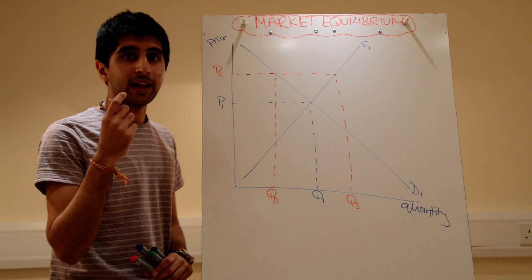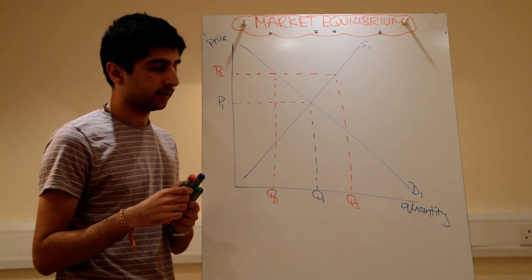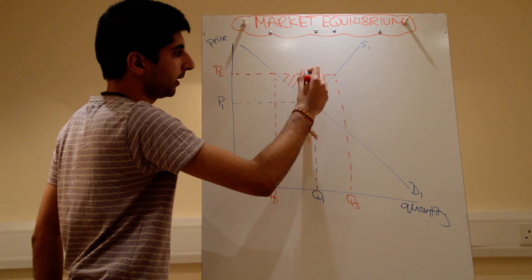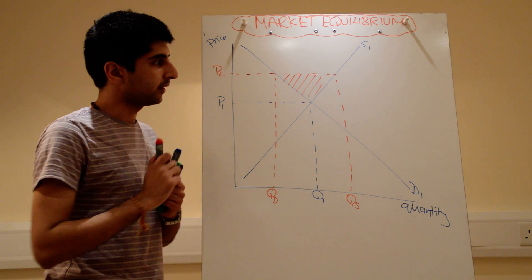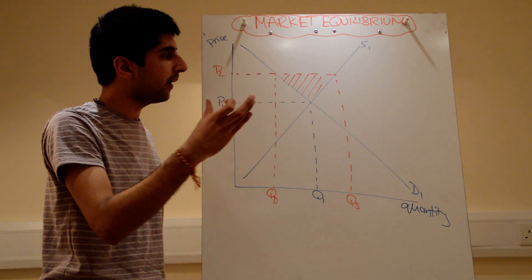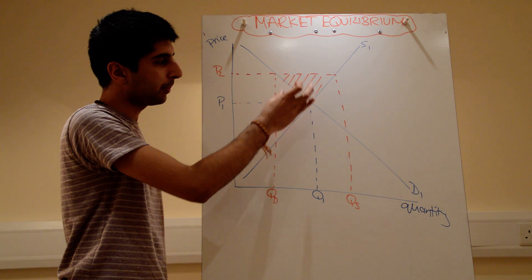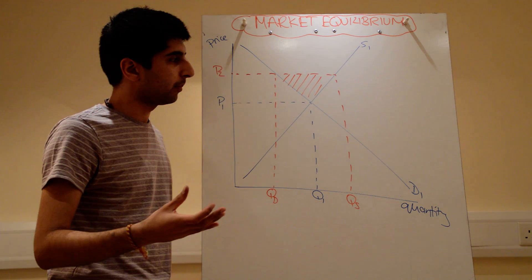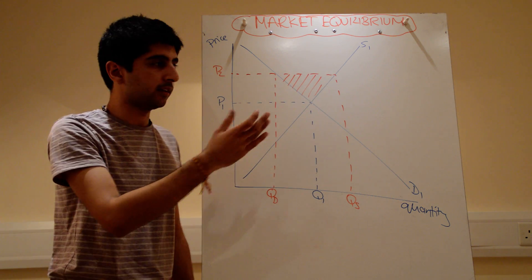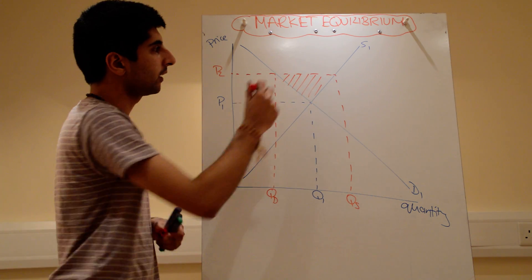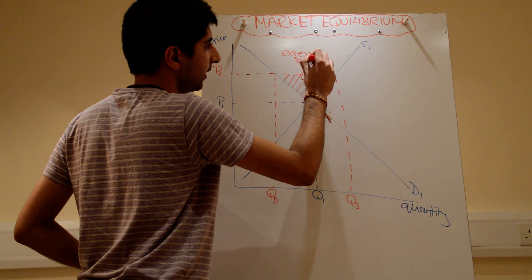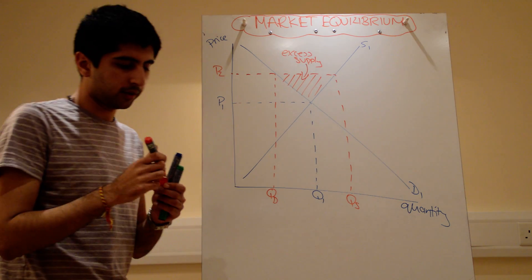We call it an excess supply. Supply is greater than demand. How do we represent that? Well, we can shade in this entire triangle here. And that triangle represents, at the current price level, all the points where supply is greater than demand, up until where demand equals supply. So all the points in the shaded area, supply is greater than demand. I can label that excess supply. So that entire shaded area represents an excess supply, supply's greater than demand.